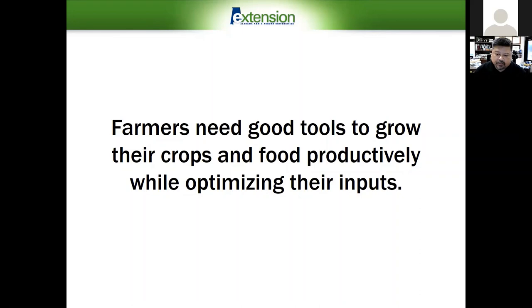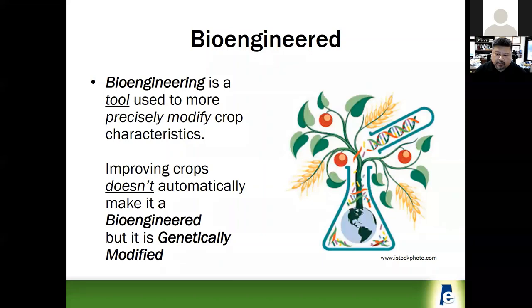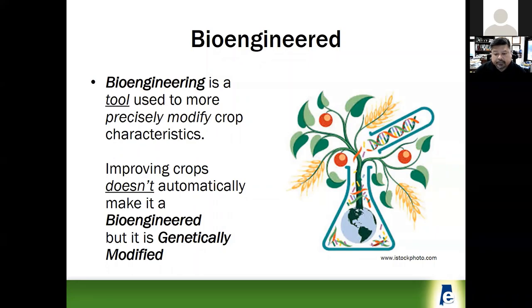We want to give producers good tools to grow their crops productively, not just for themselves but also for consumers. Bioengineering, which is also another name for genetic engineering, is a tool that scientists utilize to modify and introduce new traits. The term GMO is a very broad term that most in agriculture frown upon because it doesn't accurately define the technology, particularly regarding the incorporation of new DNA, which is bioengineering.